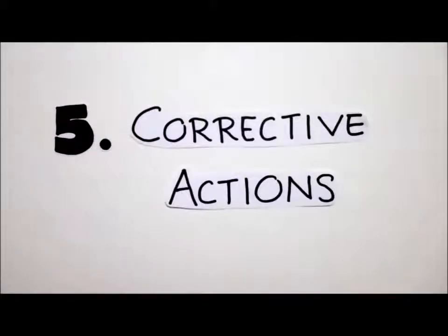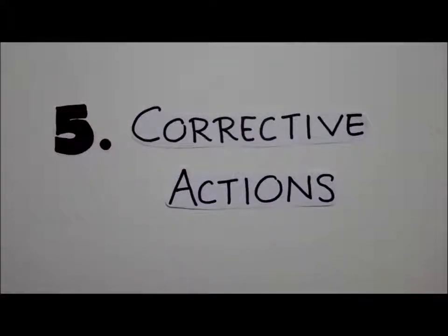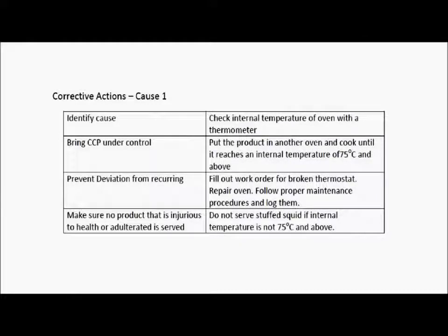The fifth principle is taking corrective actions when a critical limit has not been met. When a critical limit has not been met, it is called a deviation. This table shows what is being done when a deviation has been identified. The deviation has to be first identified and then brought under control. Steps will then be taken to prevent deviations from occurring again. Finally, it has to be ensured that no product that is injurious to health or adulterated is served.